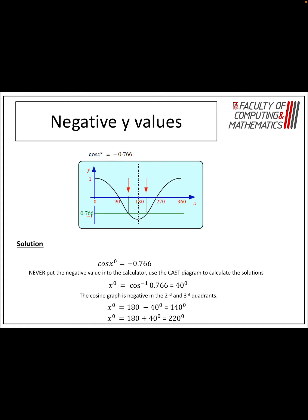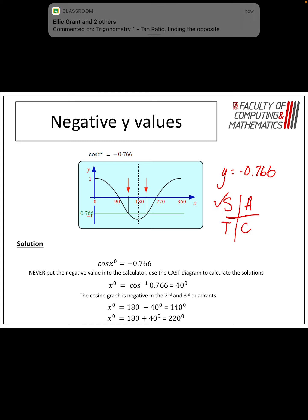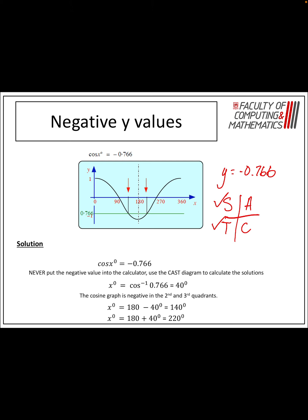Now let's go into negative values. We have cos x is equal to negative 0.766. I've drawn the line y equals negative 0.766 — you can see it's negative. That means cos is negative, so I don't have an answer in the first quadrant. I do have an answer in the second quadrant and the third quadrant because cos is negative in those two quadrants. The important thing: never put this negative into your calculator — it'll give you the answer closest to the y-axis and that's not what we're looking for. Put 0.766 into your calculator to get the answer in the first quadrant — it gives you 40 degrees.